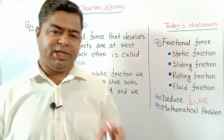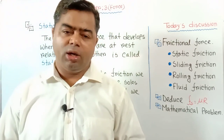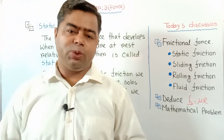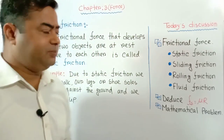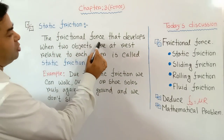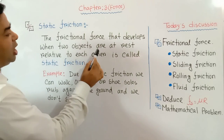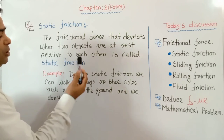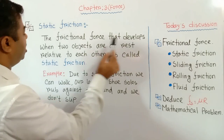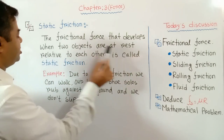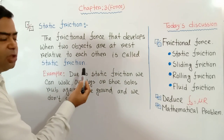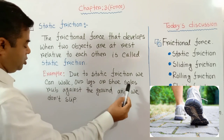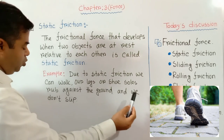Now we discuss about static friction. When we walk, our legs grip against the ground and we don't slip — that happens due to static friction. The frictional force that develops when two objects are at rest relative to each other is called static friction. For example, due to static friction, our shoe soles grip rough against the ground and we don't slip.